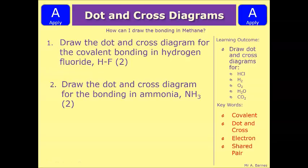Let's see if we can put that to the test. Question one: draw the dot and cross diagram for the covalent bonding in hydrogen fluoride. Part two: draw the dot and cross diagram for the bonding in ammonia NH3. Think back to working out the number of electrons in the outer shell, the number of bonds they need to form, do the overlapping, put in the single bonds and the dot and crosses. Pause the video, have a go, and we'll see how you've done in a minute.